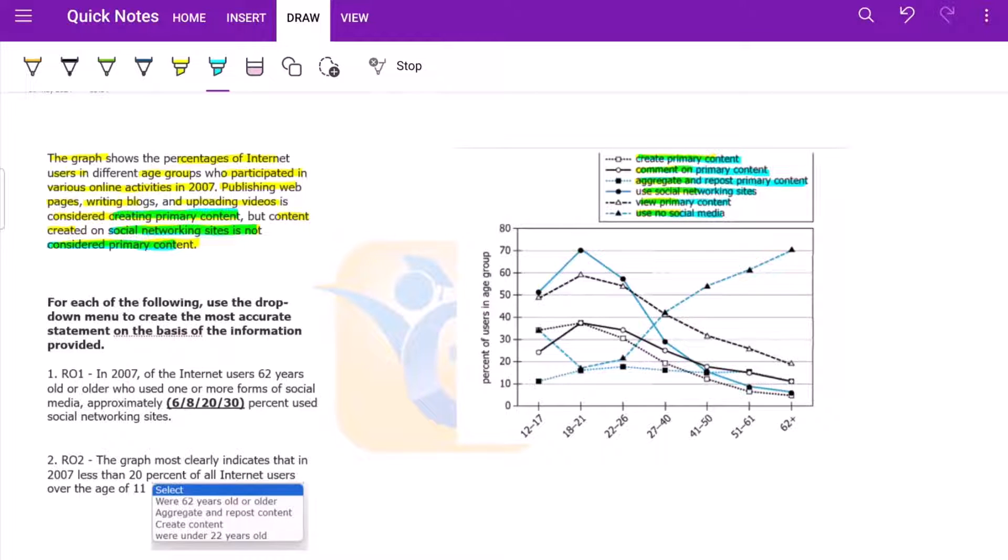Let us jump right into the question. For each of the following, use the drop-down menu to create the most accurate statement on the basis of information provided. So in 2007, the internet users 62 years old or older who used one or more form of social media, approximately [blank] percent used social networking sites.